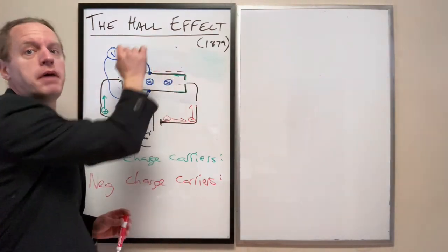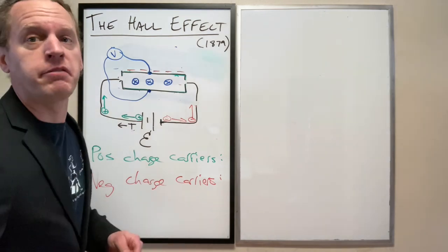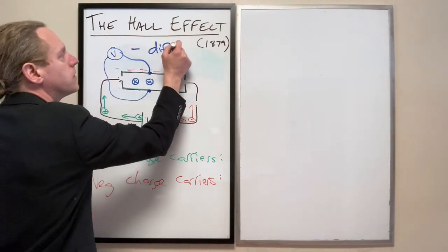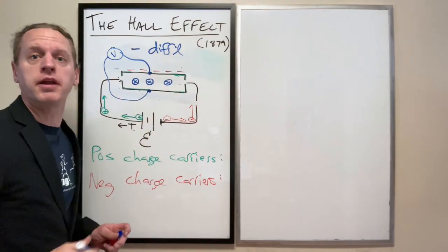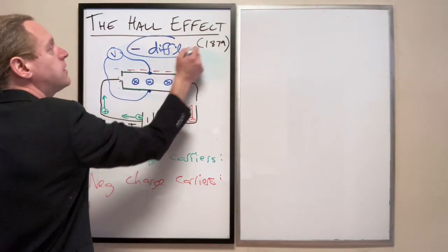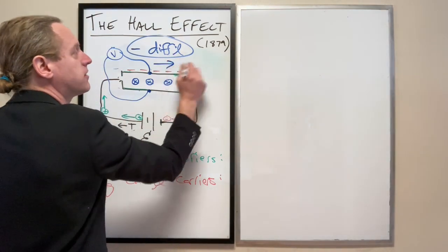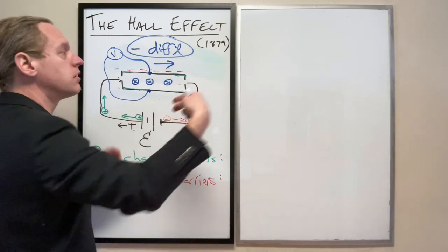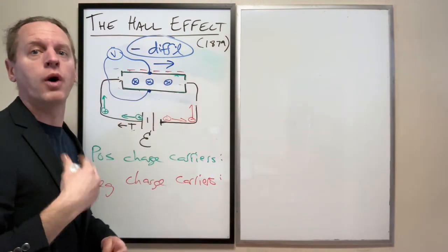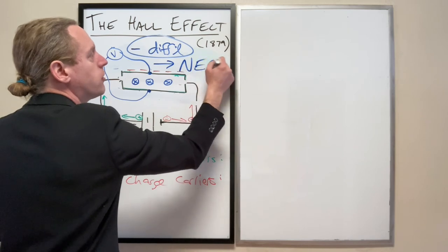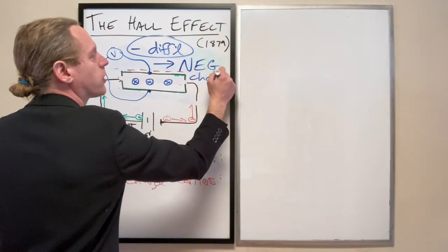And that's the measurable difference here. That voltmeter will now read a negative differential again from the top to the bottom plate here. And that tells us, this is exactly what we find, that tells us that it is in fact negative charge carriers going against what we typically could call the conventional current.